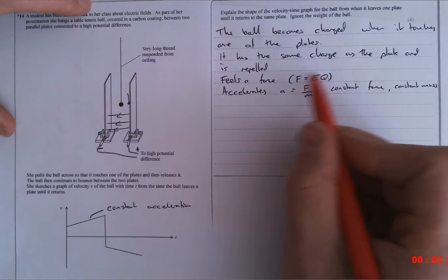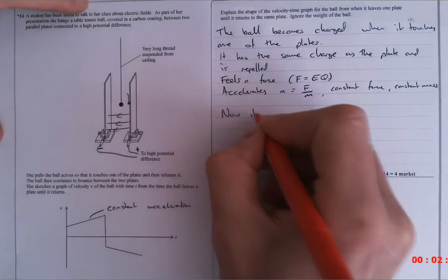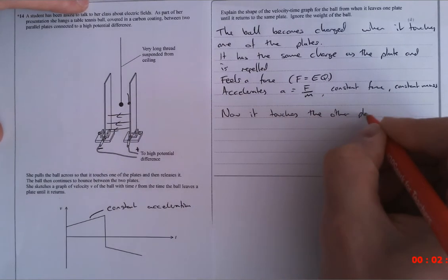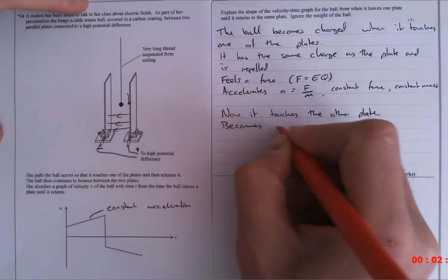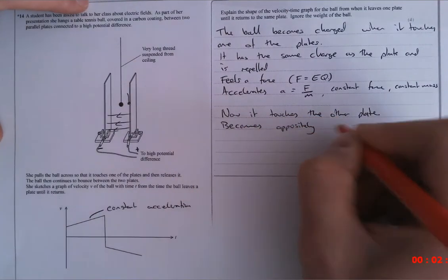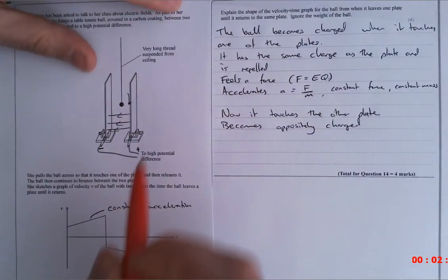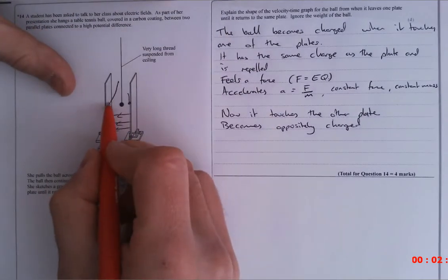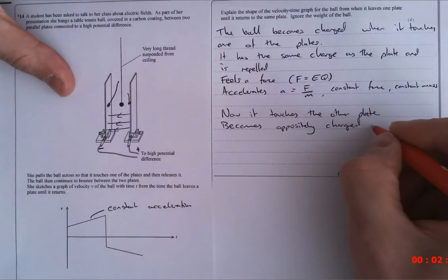And we obviously know that the force is given by this equation. So now what happens, so now it touches the other side. And it becomes oppositely charged. So what now happens, it now reverses direction. So it's now got to this side. All of its positive charge is lost and it picks up a negative charge from this plate. And then the whole process reverses. So it becomes oppositely charged and is repelled.